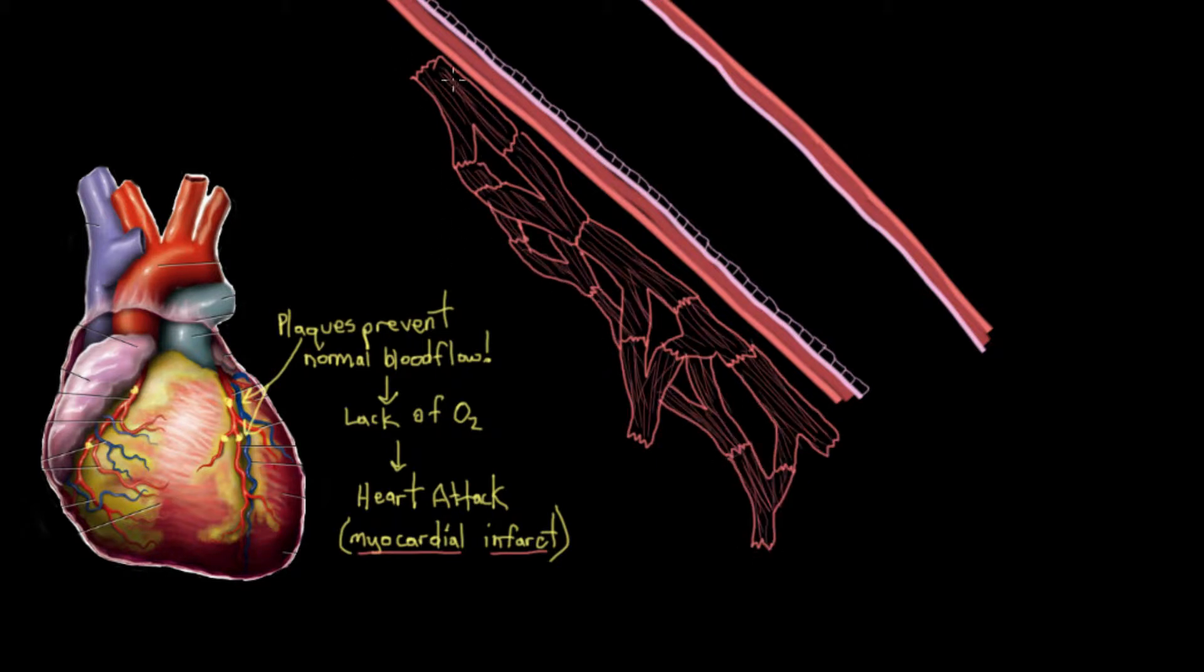You might have noticed that I drew these cardiomyocytes in a really oddly connected way. You can see connections there and there. The reason that cardiomyocytes, heart muscle cells, are connected in this way is because by being connected like this, they can more efficiently work together to make sure that the heart pumps properly.